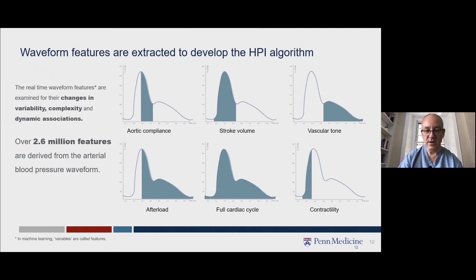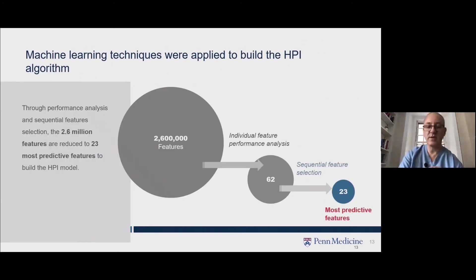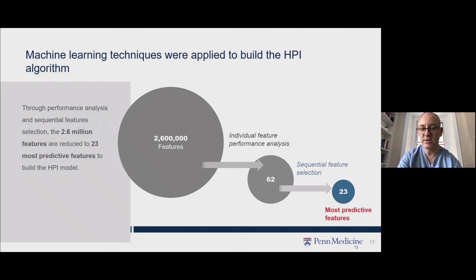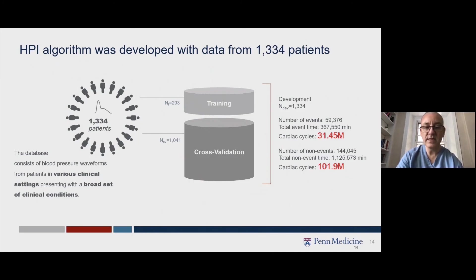Not all of those features will be important or specifically predictive, but machine learning techniques were applied to identify what ended up as the 23 most predictive features. These features are not just single characteristics, but a combination of factors which incorporate how different characteristics interact with each other. The data set included over 1,300 patients, and when you consider the physiological data collected, that number of patients provided over 130 million individual heartbeats.